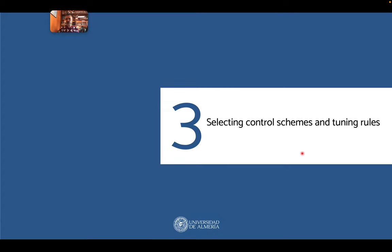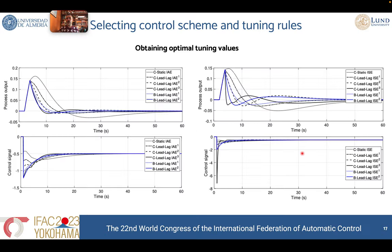To select one of the tuning rules, what we did was obtain for all cases — the static feedforward compensator and the lead-lag compensator for both the classical and non-interactive control schemes — the optimal values of the parameters. We developed an optimal algorithm to get the static feedforward compensator and the lead-lag compensator by optimizing one, two, or three parameters, for the integral absolute error and the integral square error. We then compared all the optimal solutions and observed that the blue ones give the best results, and compared those optimal values with our rules.